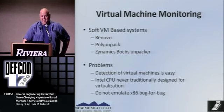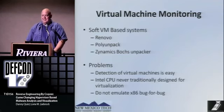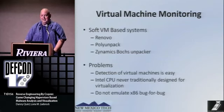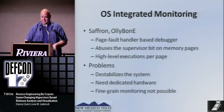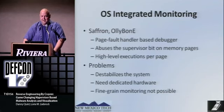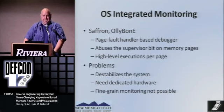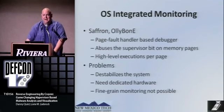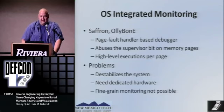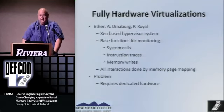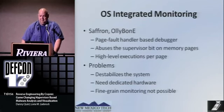Software-based virtual machines — things like Renovo, PolyUnpack, and the Dynamic Binary Unpacker — have problems because detecting them is actually pretty easy. The Intel CPU was never really meant to support virtualization, and they don't emulate bugs for bug. OS-integrated debugging, like Saffron and OllyBone, abuses the page fault handler and sets a supervisor bit on running pages to get some idea of execution. The problem I had with Saffron is it destabilized the system — it was good at unpacking once, but if you wanted to do anything else you had to reboot. It wasn't flexible for an automated unpacking system, and you could only get monitoring at page boundaries.